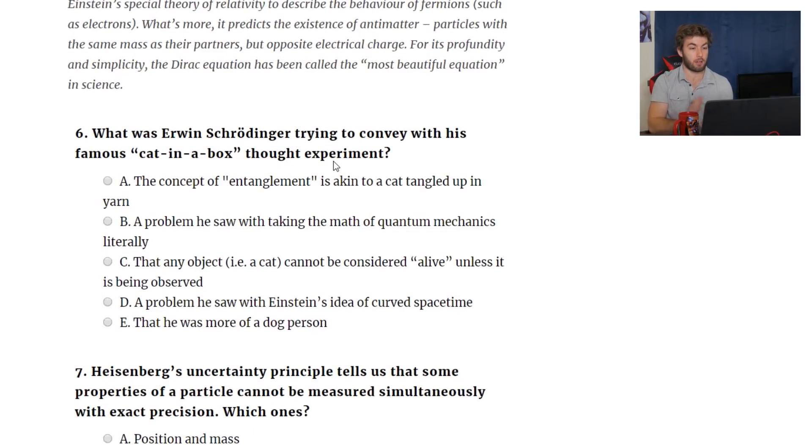What was Erwin Schrodinger trying to convey with his famous cat-in-a-box thought experiment? The concept of entanglement is akin to a cat tangled in yarn. That's pretty funny. I'm not creative enough to come up with these kinds of possible answers. The problem he saw with taking the math of quantum mechanics literally, that sounds about right. That any object, i.e. a cat, cannot be considered alive unless it is being observed. No. A problem he saw with Einstein's idea of curved space-time. That he was more of a dog person. Yeah, but who's not a dog person? Wrong people are not dog people.